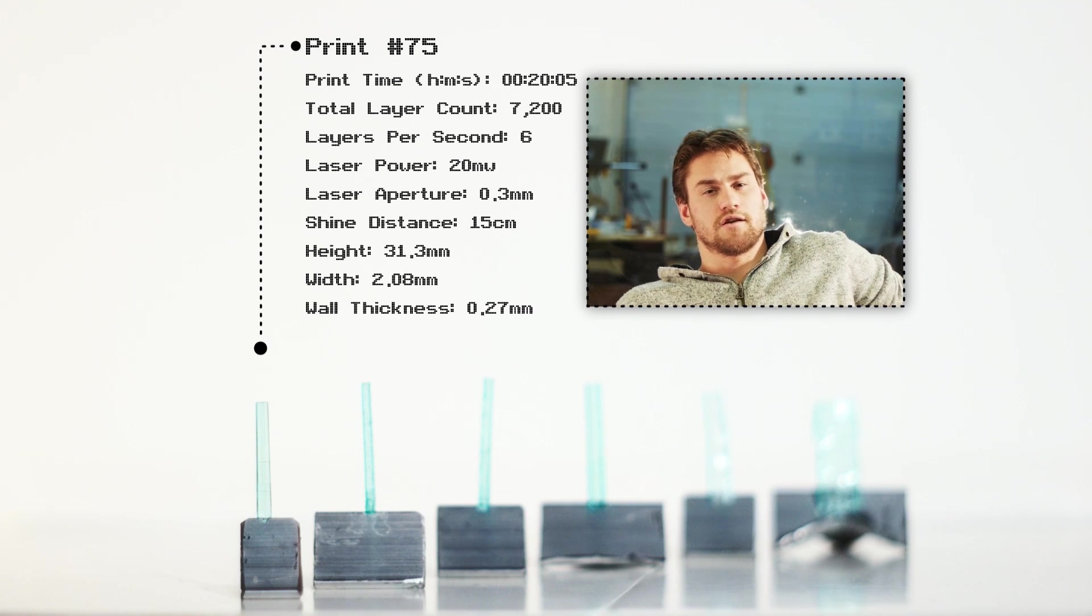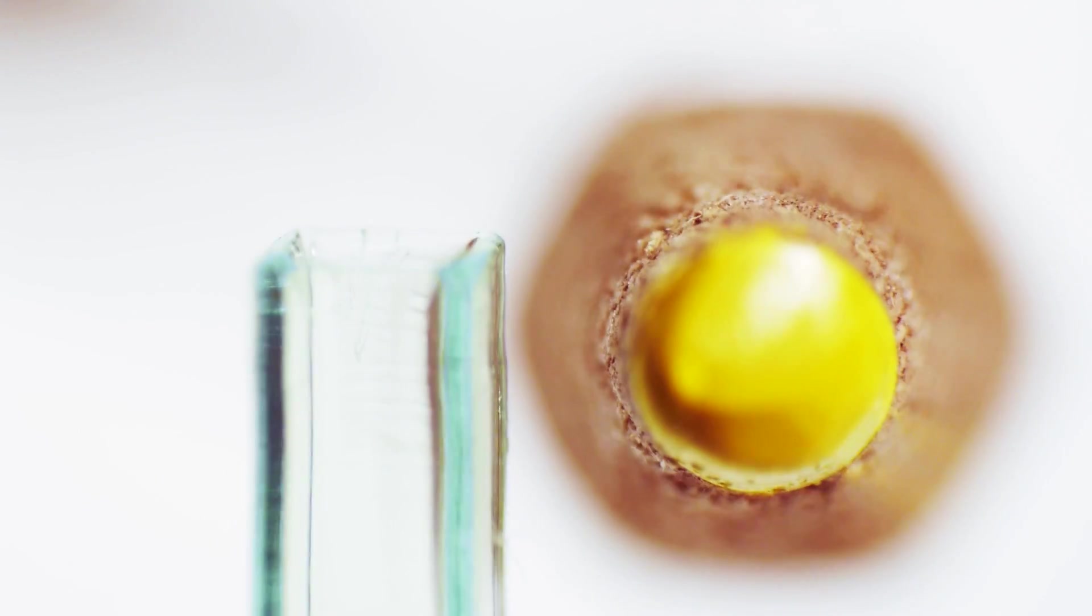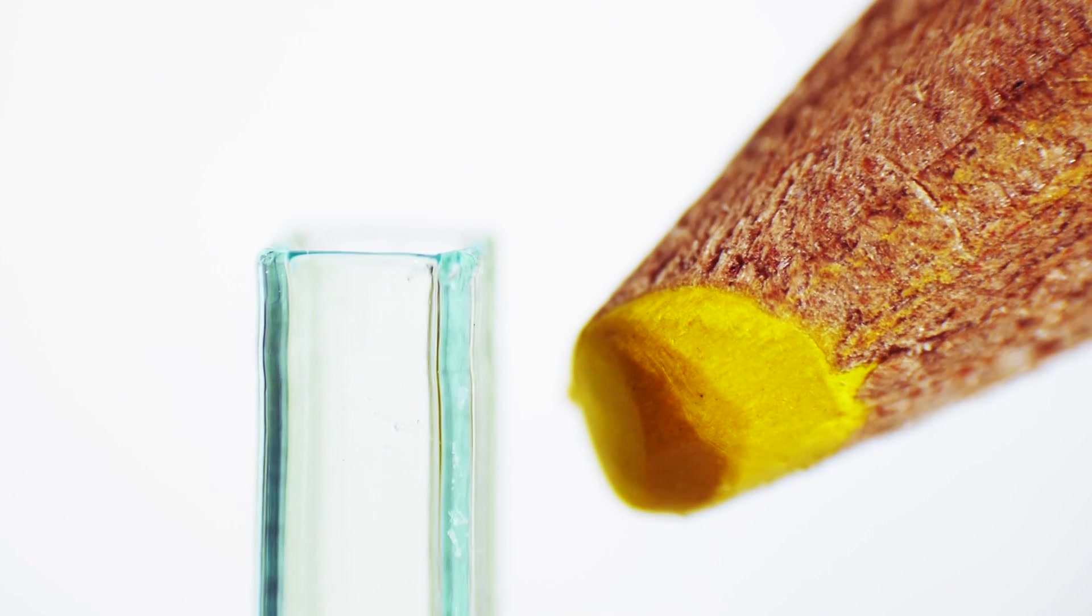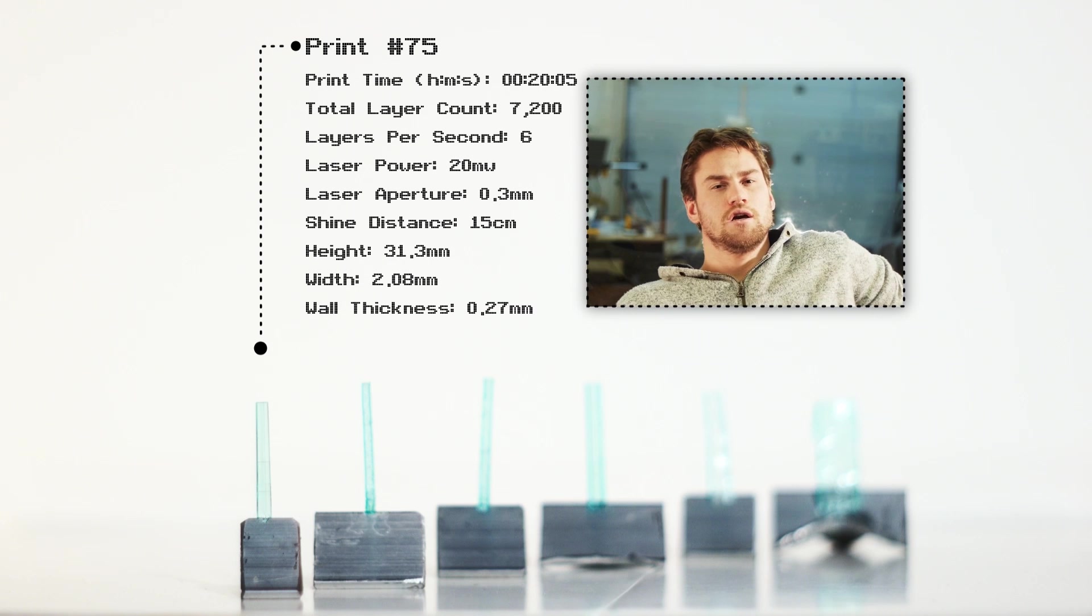So over the course of 20 minutes that gives us 7200 layers just in this one small print. And it's just amazing how clear this print is. It basically looks like glass. We're very happy with this print. And it shows us that if we let the printer really take its time, it can do amazingly high quality prints.